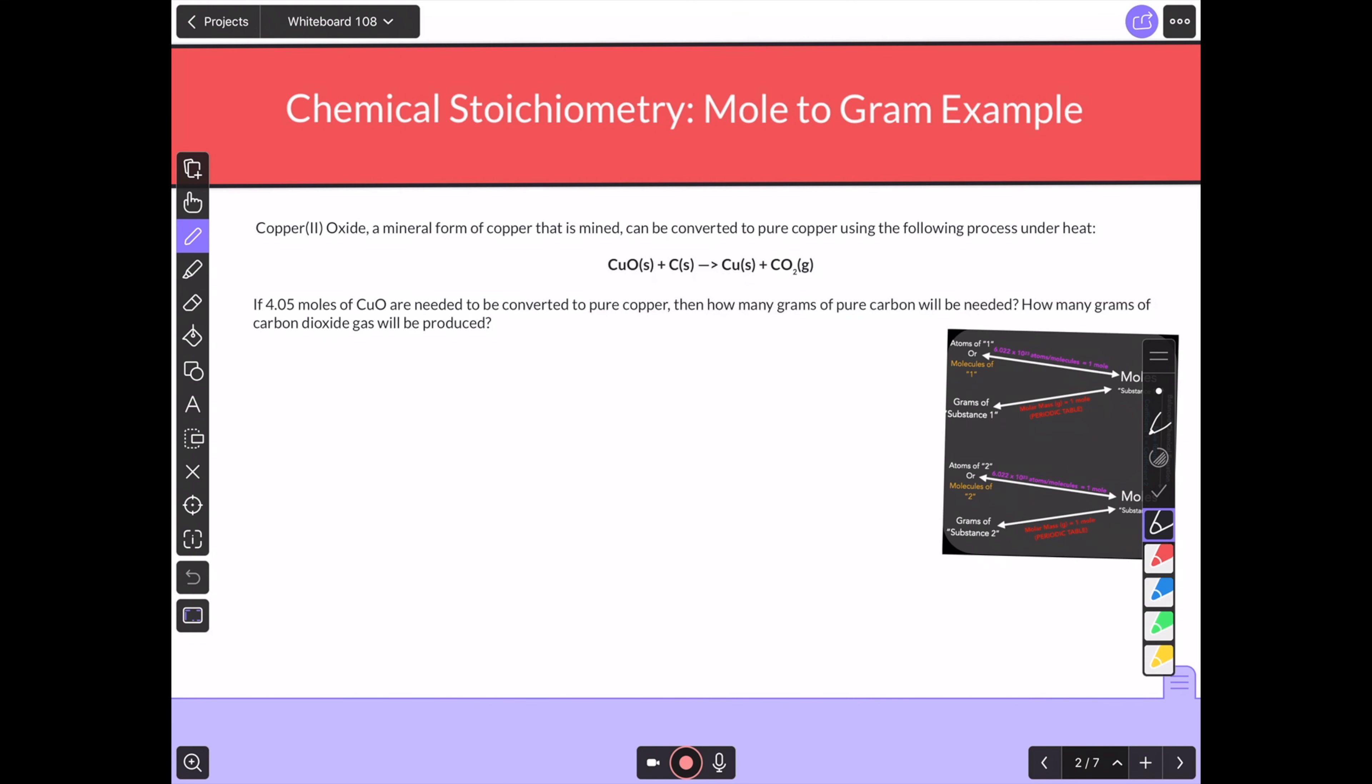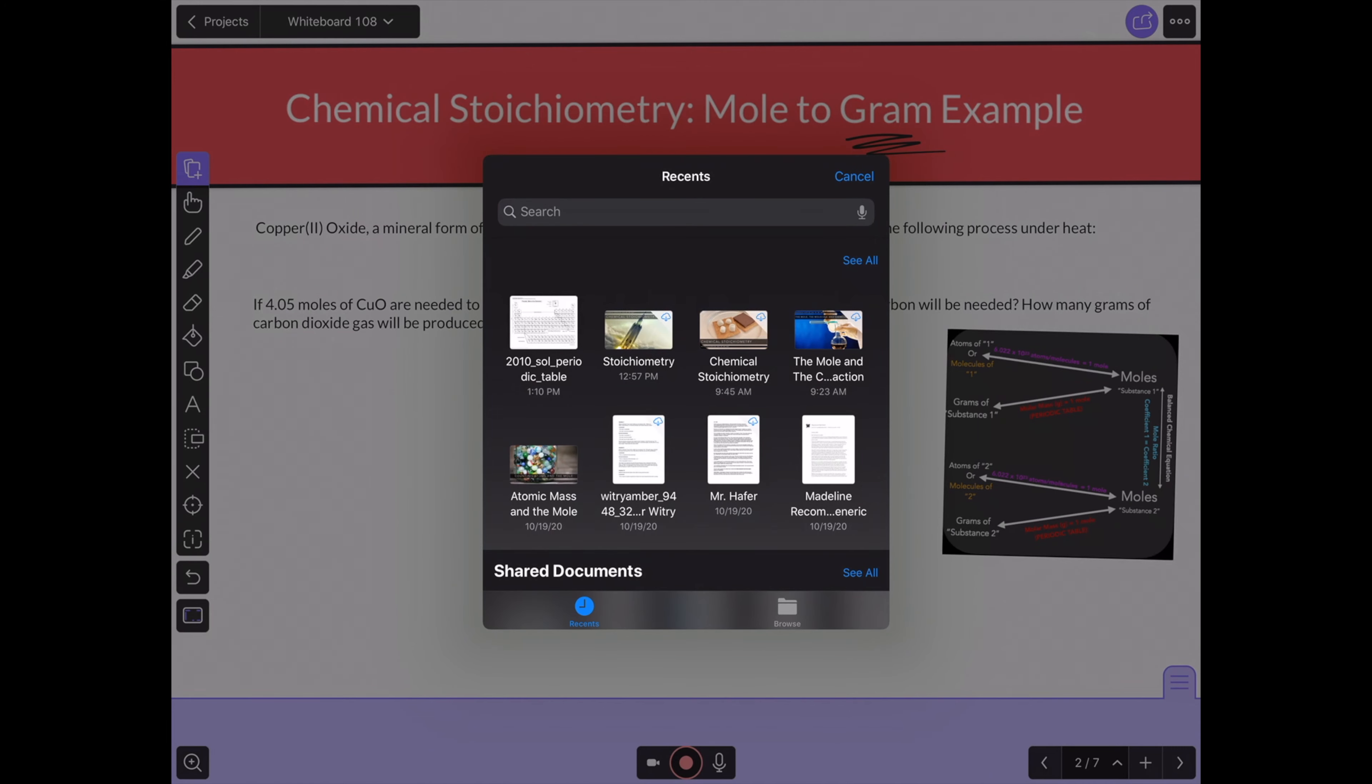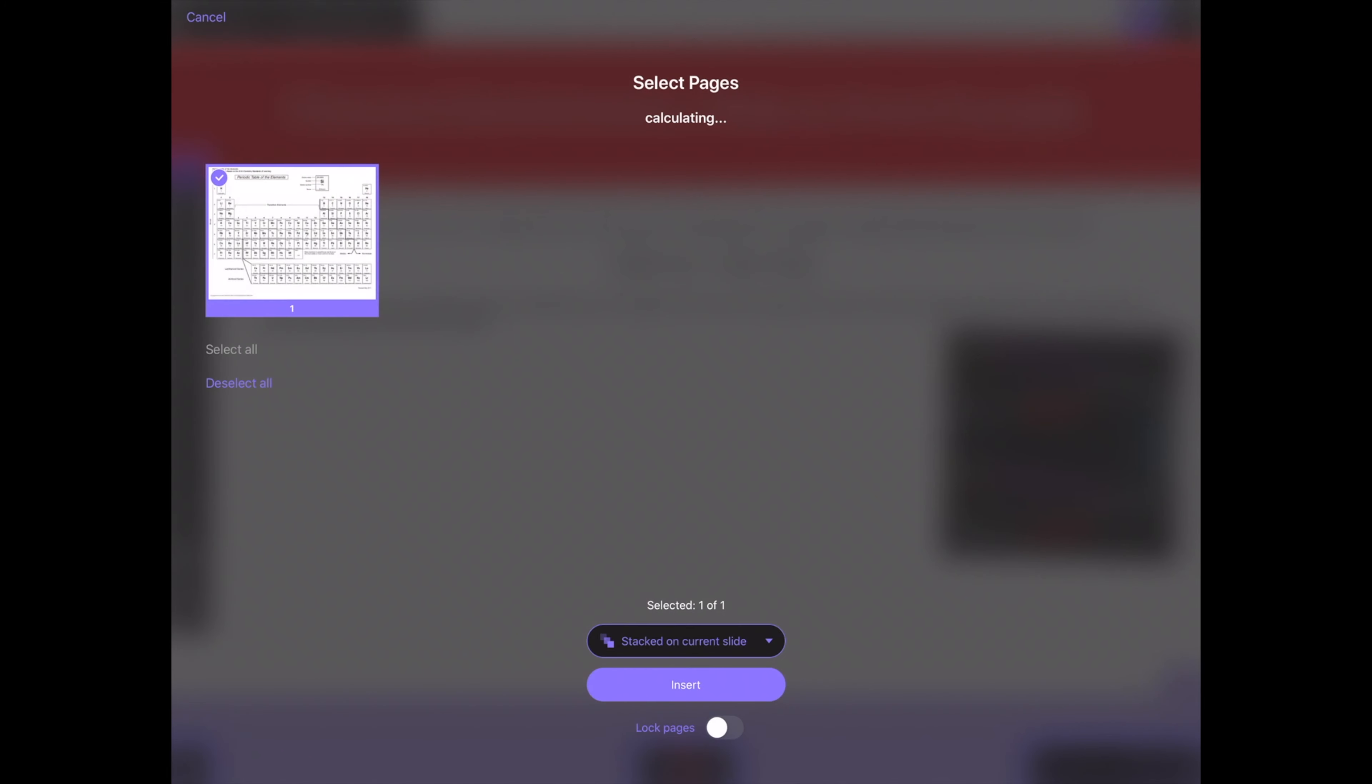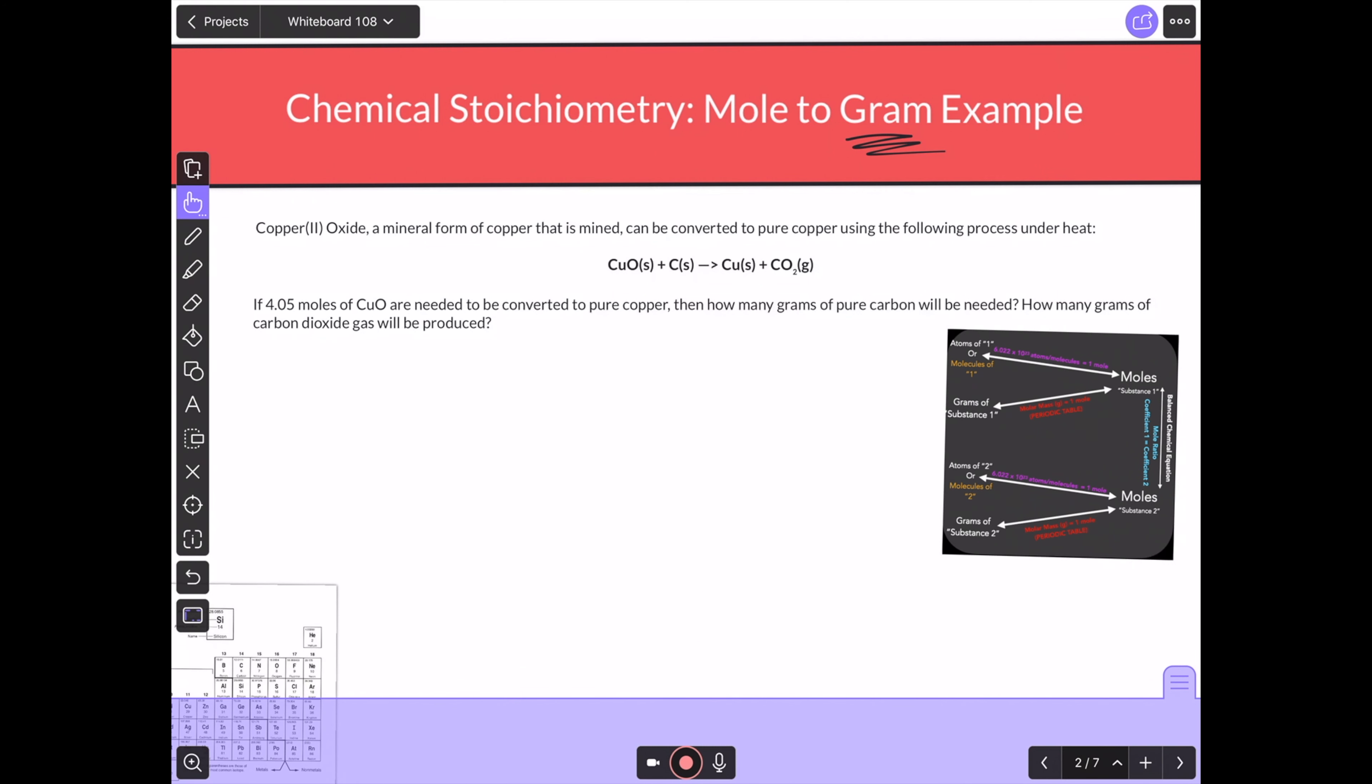Here we have a multigram problem. Whenever I have grams, you can bet I'm going to need my periodic table. So I'm going to go ahead and pull that out. So I've got my periodic table ready.